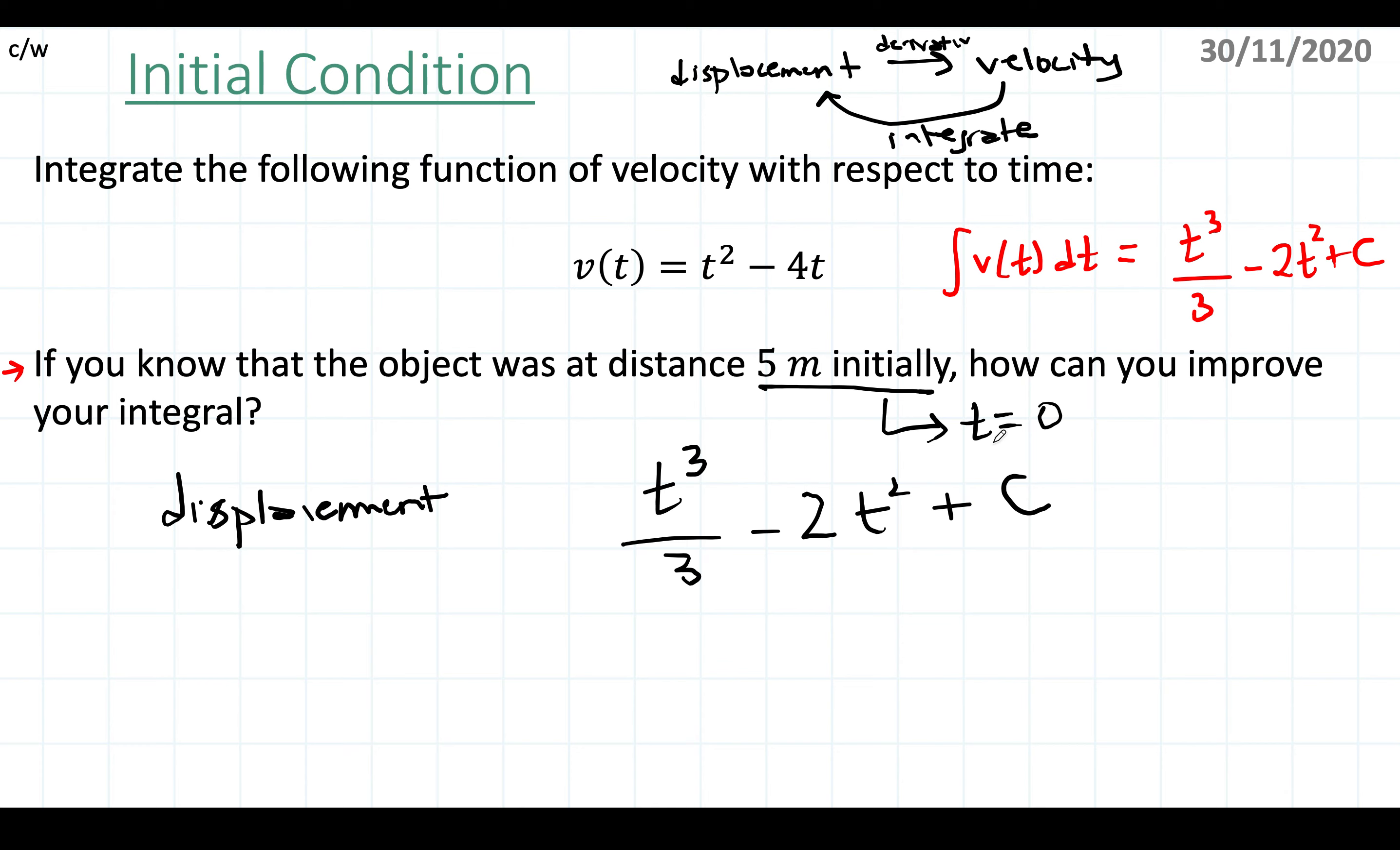Sometimes they do actually give you extra information—maybe when time equals 3, the distance is that, and so on. These are all called initial conditions or boundary conditions. They tell you information about the function you integrated.